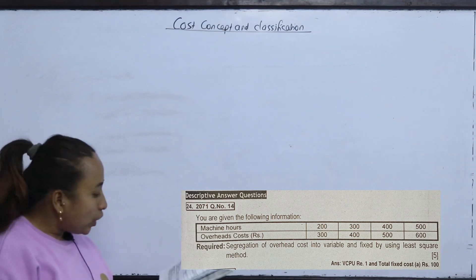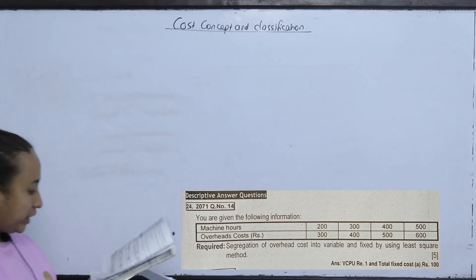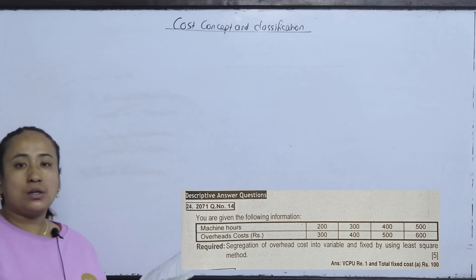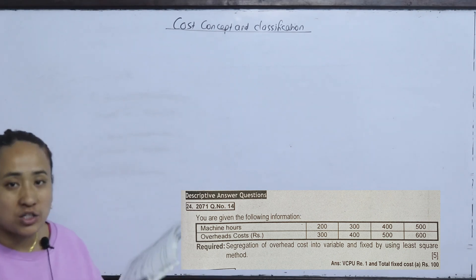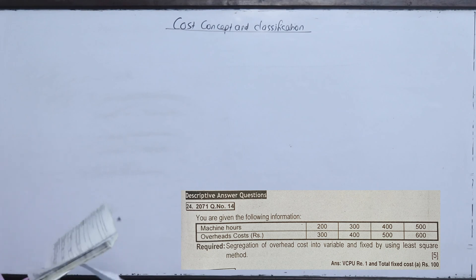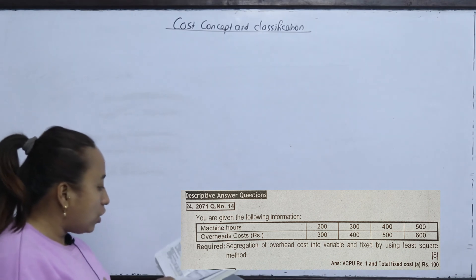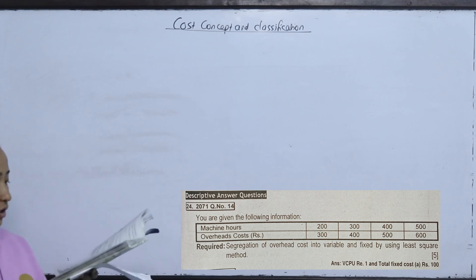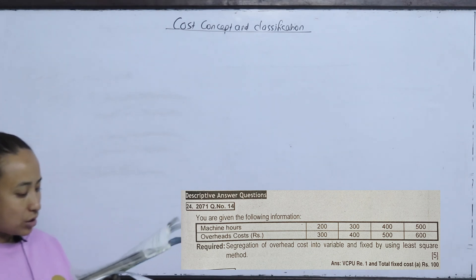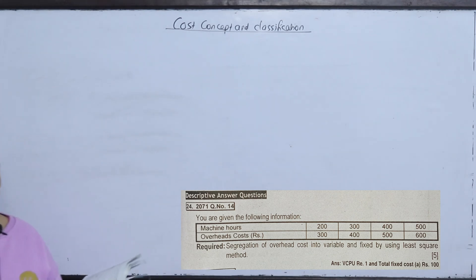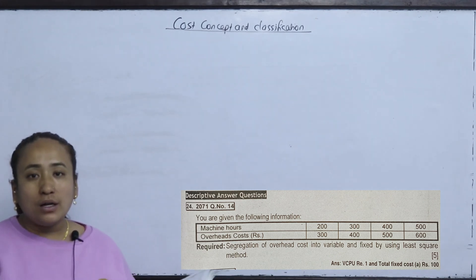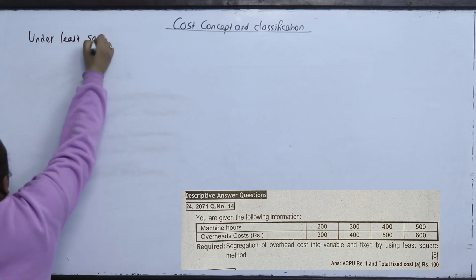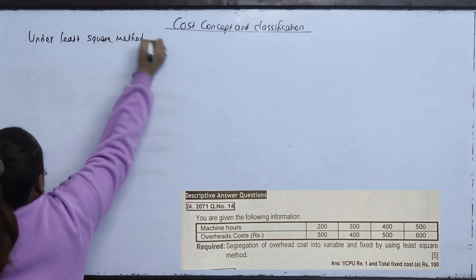The next question: you are given the following information. The activity level is output, denoted x (machine hours), and total cost is denoted y (in rupees). Required: segregate the overhead cost into variable and fixed cost using the Least Square method.